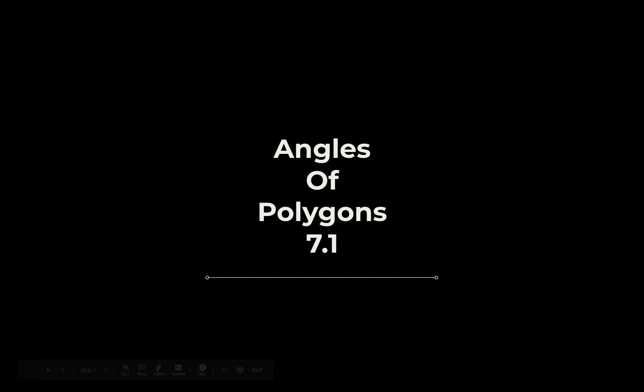Welcome back geometers. It is time for 7.1 angles of polygons. Recall what a polygon is: a polygon is a two-dimensional closed shape that has straight sides, and we use little n to represent the number of sides. It also represents the number of angles. We are only dealing with convex polygons.